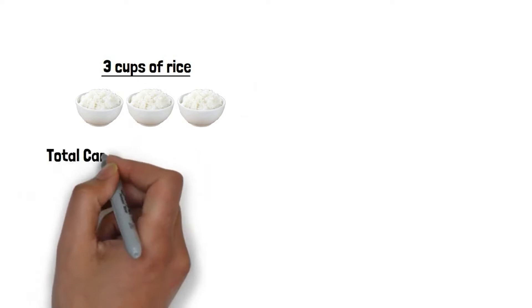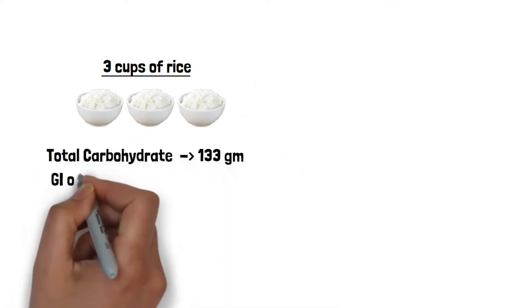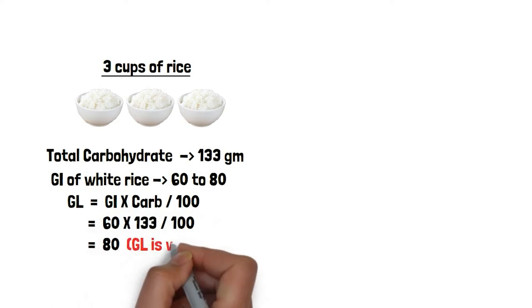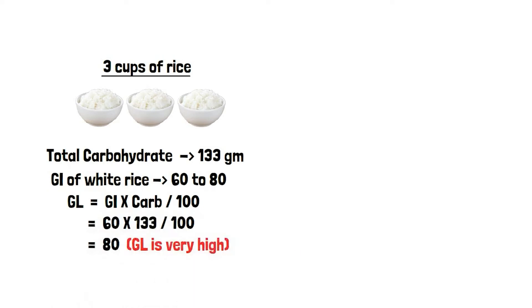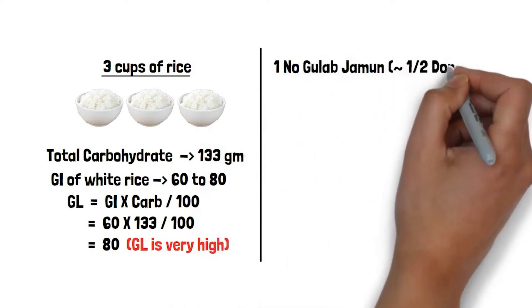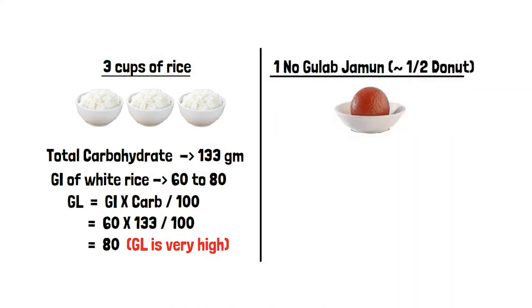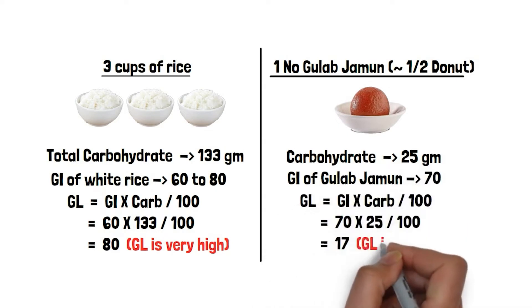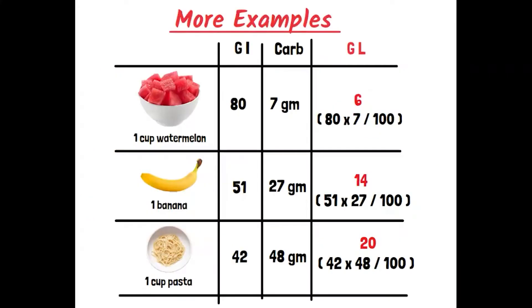In three cups of rice, the total carbohydrate per serving is around 133 grams. The glycemic index of white rice is anywhere between 60 to 80 — I'll use an average of 60 — so the glycemic load comes to around 80, which is very high. One gulab jamun has around 25 grams of carbohydrates with a glycemic index of around 17, giving a glycemic load of about 17, which is intermediate.